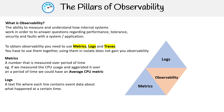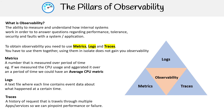Then you have logs — these are text files where each line contains event data about what happened at a certain time. And then you have traces. This is a history of requests that travels through multiple apps and services so we can pinpoint performance issues or failures.